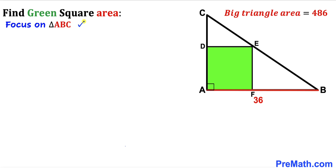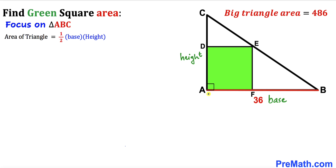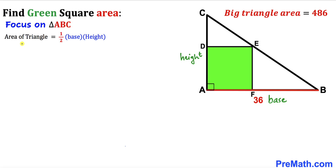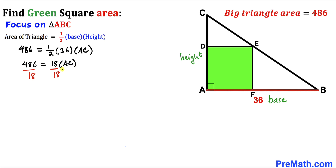Let's focus on triangle ABC whose area has been given as 486. Recalling the area of a triangle formula: Area equals one-half times base times height. The base is 36 and the height is AC. So 486 equals one-half times 36 times AC, which simplifies to 486 equals 18 times AC. Dividing both sides by 18, AC turns out to be 27 units.